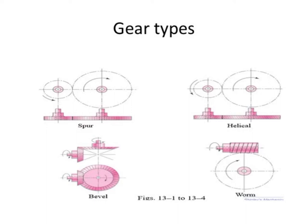In spur and helical gears, power is transferred between two parallel shafts. But sometimes we want to transfer power between shafts that are perpendicular or at a certain angle. For this we use a bevel gear. The bevel gear is a type of gear where the shaft axes are intersecting. The teeth could be parallel or not parallel to the shaft axis.